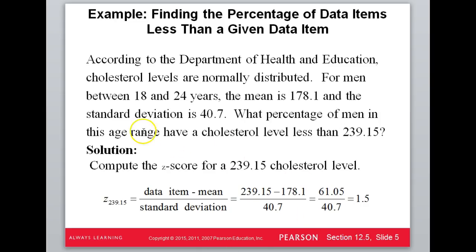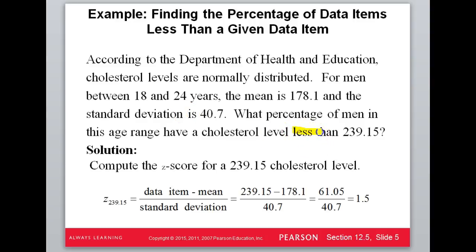Let's first practice with a single value — with a less than. The table always gives you less than percentages. According to the Department of Health and Education, cholesterol levels are normally distributed, so we can use the table. The mean is 178.1 and the standard deviation is 40.7. What percentage have a cholesterol level less than 239.15? First, find the z-score. When you put this in your calculator, make sure to put parentheses around the numerator, or do it in steps — the z-score is 1.5.